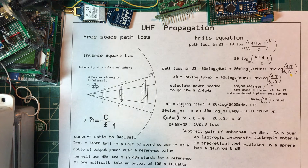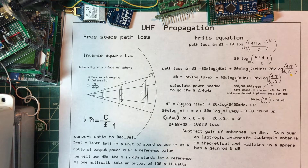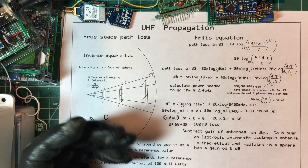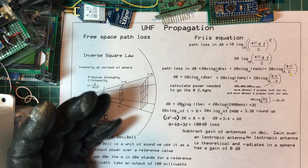Let's try to go one kilometer at 2.4 GHz. Log base 10 of 1 is 0, because 10 raised to the power of 0 is 1 — so that term is zero and we can ignore it. We already have 32, so all we need is 20 times log base 10 of the frequency in megahertz. 2.4 GHz is 2400 MHz. Log base 10 of 1000 is 3, and log base 10 of 10,000 is 4 — so 2400 is somewhere between three and four. I'll pick 3.4.